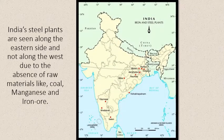When you look at the map, most iron and steel plants are on the eastern side of India, not the western side. This could be a board question — why are most steel plants located in the eastern side? The reason is that coal, manganese, and iron ore — all three raw materials very important for steel production — are found in abundance only in the eastern side. There are many mines in eastern states like West Bengal, Jharkhand, Chhattisgarh, and Odisha.